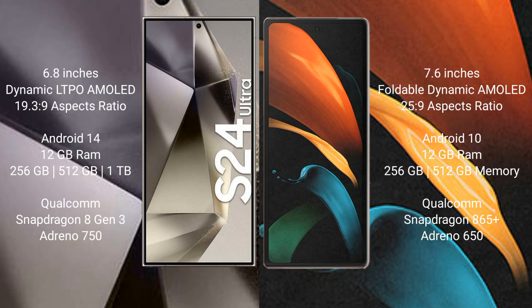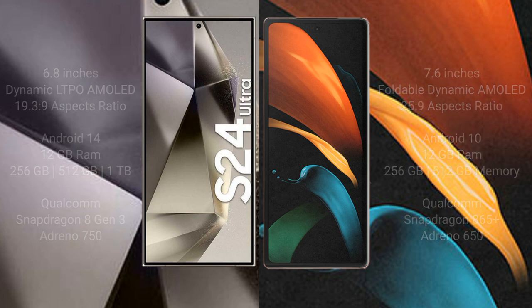The Samsung Galaxy S24 Ultra comes with 12GB RAM, 256GB or 512GB internal storage, a Qualcomm Snapdragon 8 Gen 3 processor, and Adreno 750 GPU. The Samsung Galaxy Z Fold 2 comes with 12GB RAM, 256GB internal storage, a Qualcomm Snapdragon 865 Plus processor, and Adreno 650 GPU.